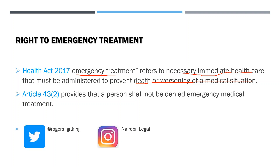An example here would be that if two people were involved in a road accident and they are critically injured, when they access a medical facility they must be accorded emergency medical treatment, because these people need necessary immediate health care to prevent them from losing their life. This is just one of the examples of circumstances that might amount to emergency treatment.